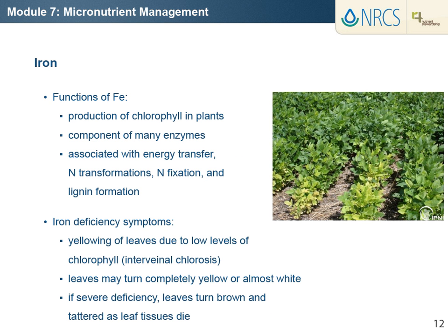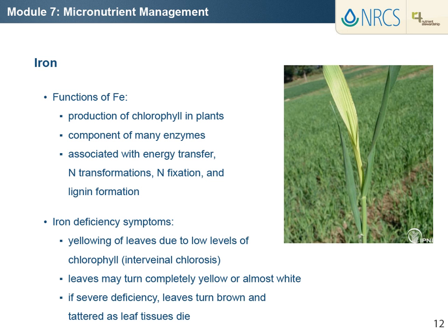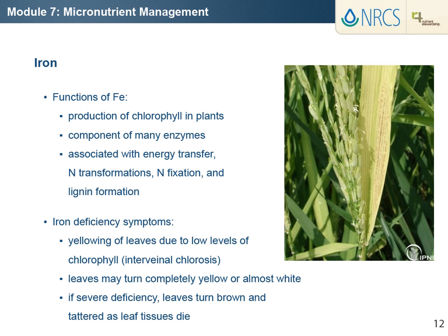Iron is involved in the production of chlorophyll in plants. Therefore, iron deficiency, called iron chlorosis, is easily recognized on sensitive crops by yellowing of leaves due to low levels of chlorophyll. Iron also is a component of many enzymes associated with energy transfer, nitrogen reduction and fixation, and lignin formation. Iron is associated with sulfur-containing compounds that catalyze several other reactions. Leaf yellowing first appears on the younger upper leaves in interveinal tissues. Severe iron deficiencies cause leaves to turn completely yellow or almost white, and then brown and tattered as leaf tissues die.